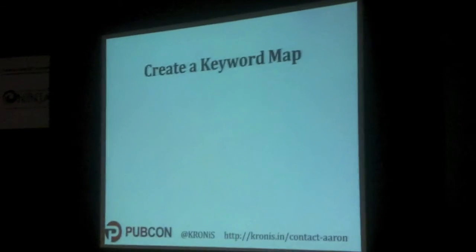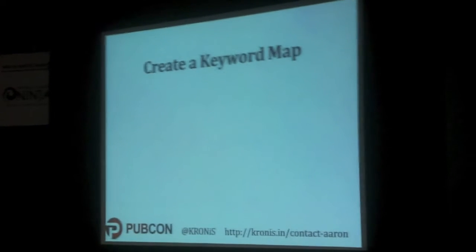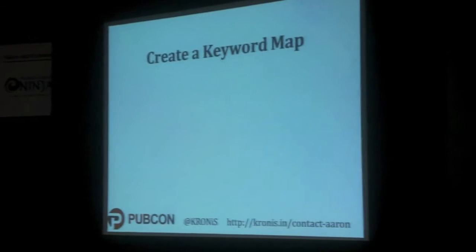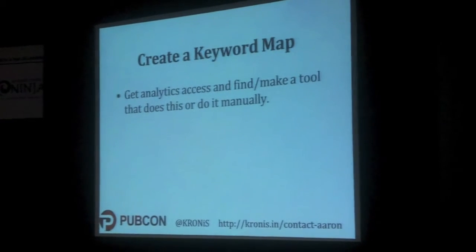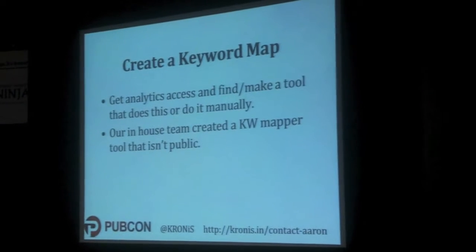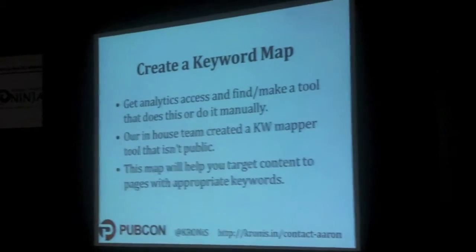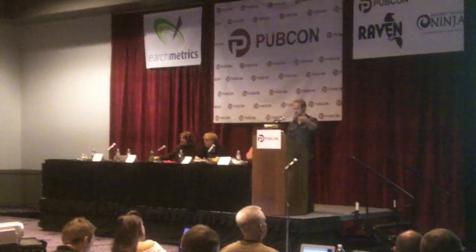What I like to do first for my clients when starting a new campaign — if they've got some analytics data and I have access to their analytics accounts — is create a keyword map. There are some tools to do this; we have our own that we made using the Analytics API. Get analytics access, find a tool that does this, or do it manually. What I'm essentially doing is figuring out which pages are the strongest and which keywords should go to them. Most sites with proper SEO will have an HTML sitemap, which kind of looks like a keyword map — it's just anchor text links going to specific pages.